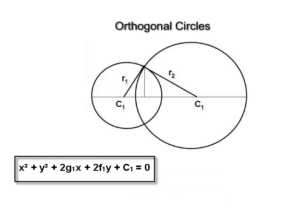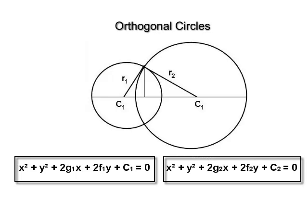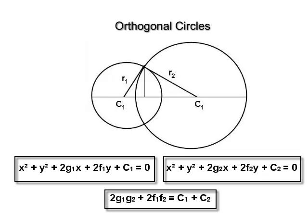Two circles x² + y² + 2g₁x + 2f₁y + c₁ = 0 and x² + y² + 2g₂x + 2f₂y + c₂ = 0 intersect each other orthogonally if 2g₁g₂ + 2f₁f₂ = c₁ + c₂.